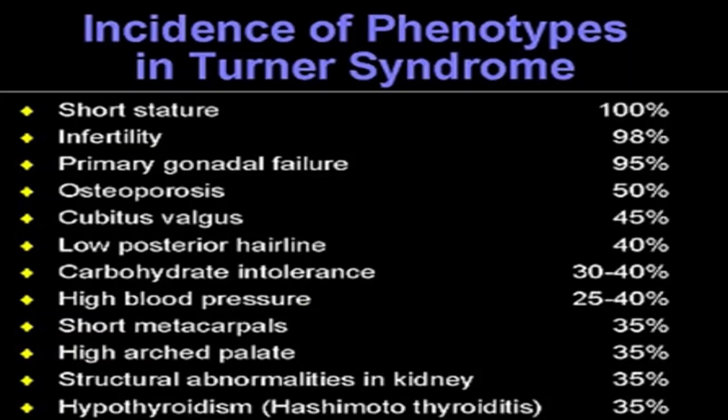This table shows the incidence of phenotypes in Turner syndrome. Short stature is present in almost 100% of cases. Infertility is present in 98% of cases, and primary gonadal failure is present in 95% of cases. Other features include osteoporosis, cubitus valgus, low posterior hairline, carbohydrate intolerance, high blood pressure, short metacarpals, high arched palate, structural abnormalities in the kidney, and hypothyroidism — with their percentages visible in this chart.